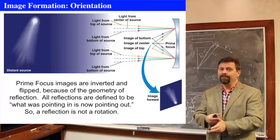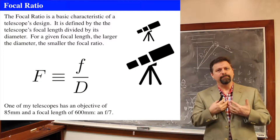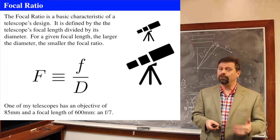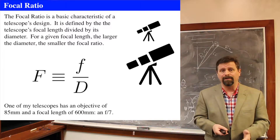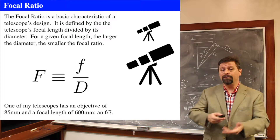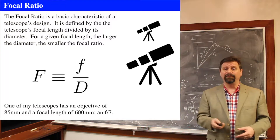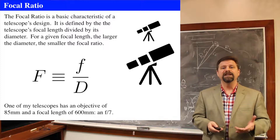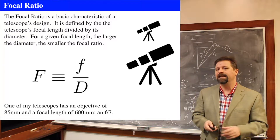More important than orientation is a characteristic of a telescope called the focal ratio. The focal ratio is a primary characteristic of every telescope's design. It's defined as the focal length of the objective or primary divided by the diameter of the objective. So: focal ratio = focal length ÷ diameter. One of my telescopes has an 85 mm diameter and a focal length of 600 mm, giving a focal ratio of 7 — or an F/7 telescope. It's a little refractor I really like.